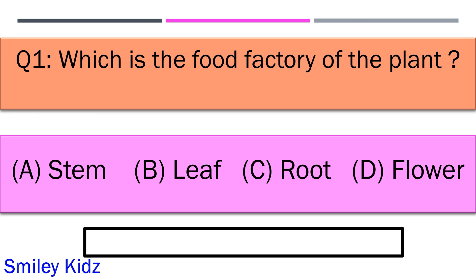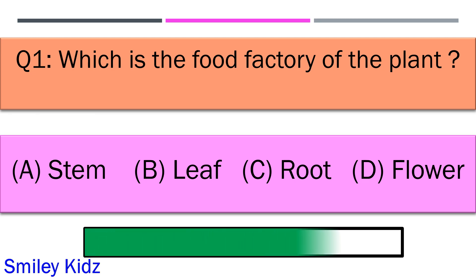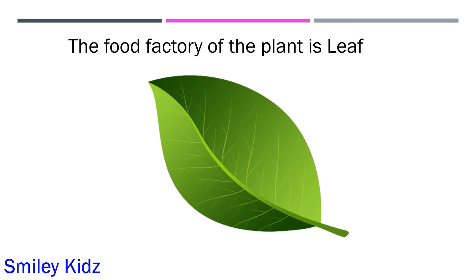Which is the food factory of the plant? Option A is stem, option B leaf, option C root, and option D flower. Your time starts now. And your time is up and the right answer is option B leaf.